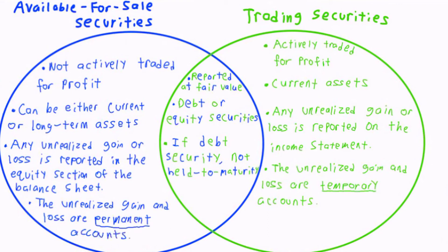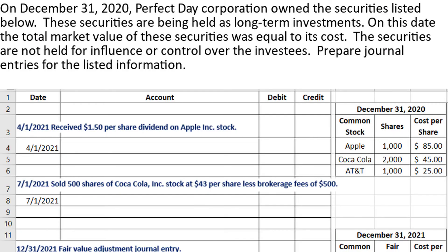Now that we understand what available-for-sale and trading securities are, let's look at some of the related journal entries. On December 31, 2020, Perfect Day Corporation owned the securities listed in the table. These securities are being held as long-term investments. On this date, the total market value of these securities was equal to its cost. The securities are not held for influence or control over the investees. Since the problem says these securities are long-term investments, we know they are not trading securities, as trading securities can only be current assets. Therefore, we know that we are dealing with available-for-sale securities.